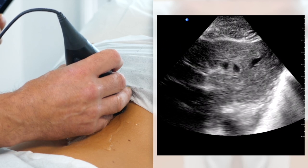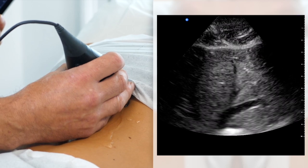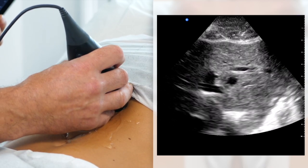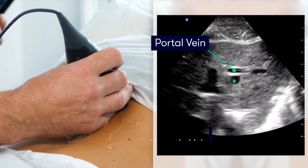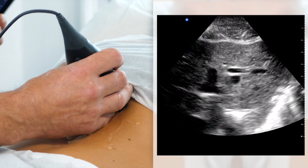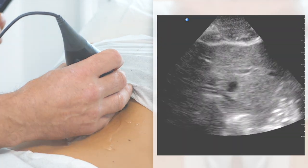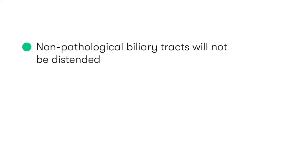We can see the hepatic veins coming down to join the inferior vena cava as we scan more superiorly. So here we've got the portal vein, which is echobright, and the hepatic vein, which is dark. Next to the portal veins, we would find the biliary tracts, which in a normal patient would not be dilated, and therefore we wouldn't really be able to see them, as is the case here.